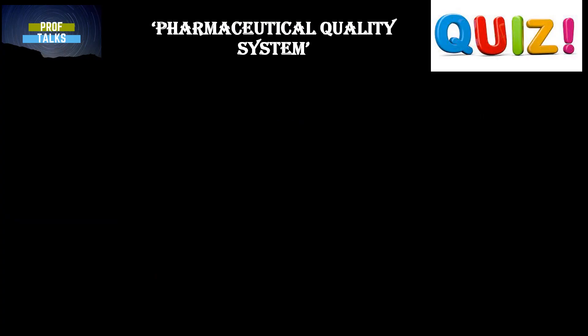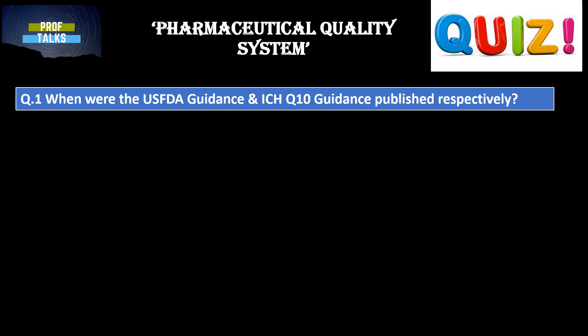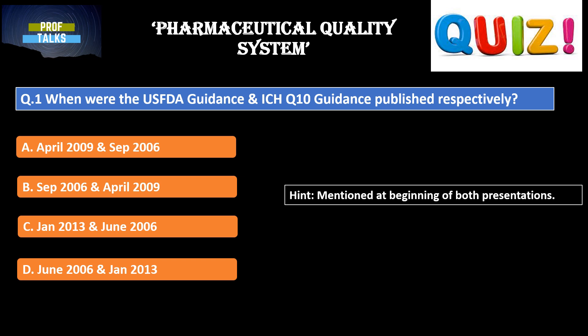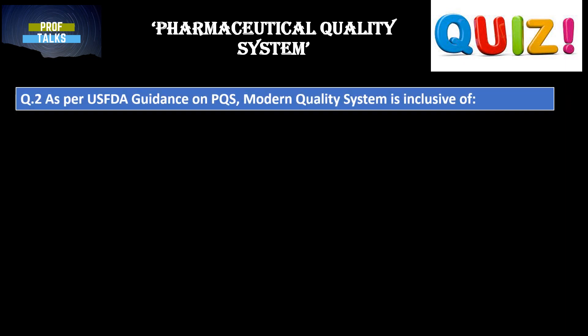The first question: when were the USFDA guidance and ICH Q10 guidance published respectively? Options are: April 2009 for USFDA guidance and September 2006 for ICH; September 2006 for USFDA and April 2009 for ICH; January 2013 for USFDA and June 2006 for ICH; and June 2006 for USFDA and January 2013 for ICH. If you know the answer, kindly type it into the comment box. Else, a hint: the timeline when they were published is mentioned in each of the respective presentations, the link of which is provided in the description box.